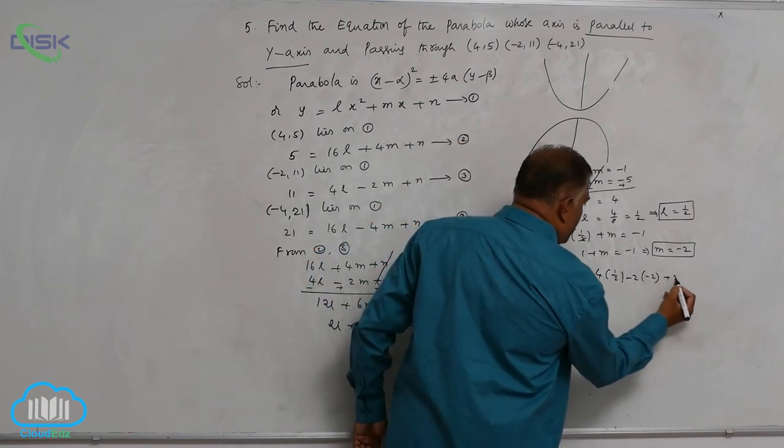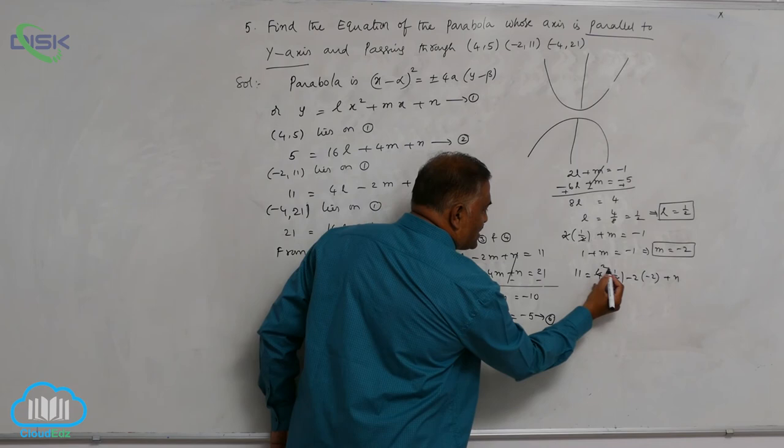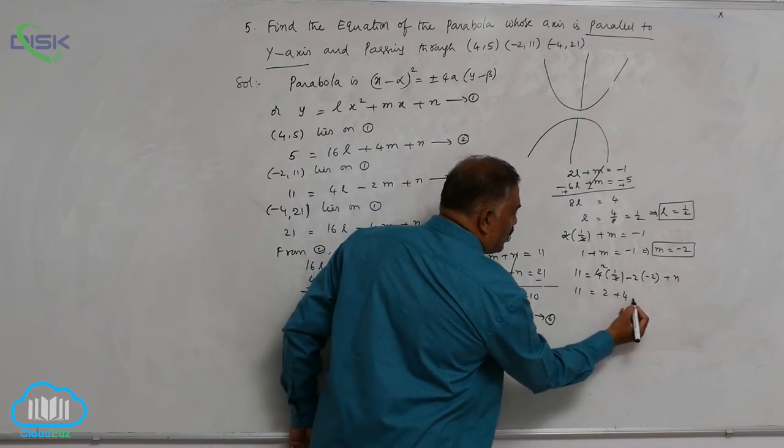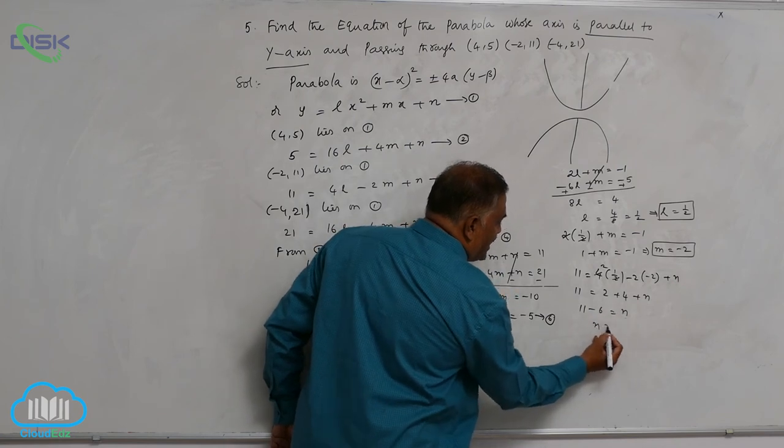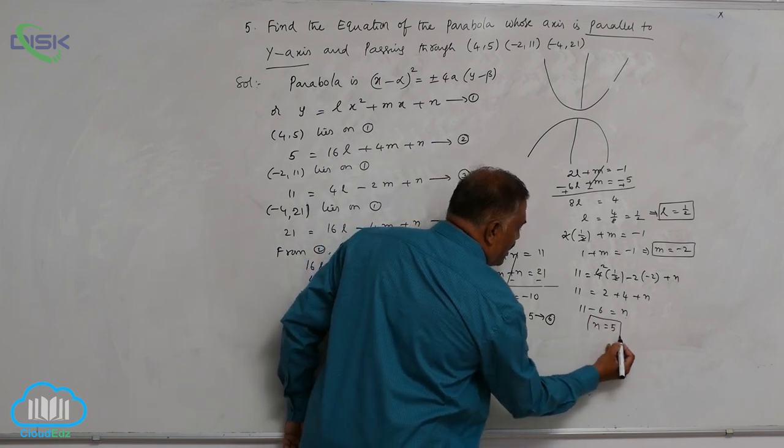So this is 2 times 11 is equal to 2 plus 4 plus n. 11 minus 6 is equal to n. n is equal to 5. So you got all the values.